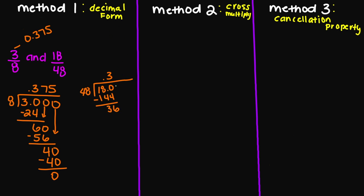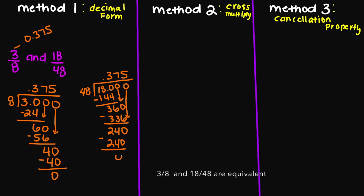48 doesn't go into 36, so I'm going to bring my zero down. 48 goes into 360 seven times. 48 times seven — this is going to equal 336. 360 minus 336 is going to equal 24. I'm now going to bring my zero down. So 48 goes into 240 five times. 48 times five is going to equal 240. And then 240 minus 240 is going to equal zero. So for this fraction, it's also going to equal 0.375. We know that these two fractions are indeed equivalent.